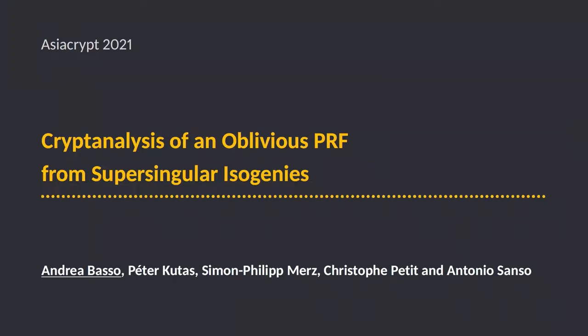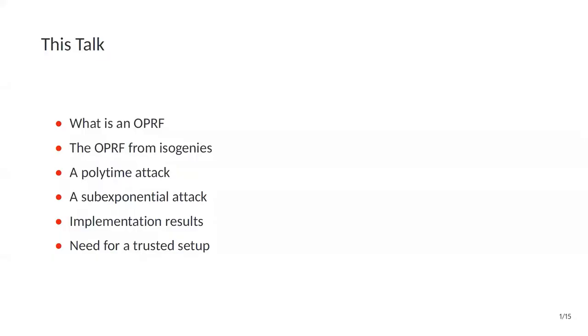Hi, everyone. My name is Andrea Basso, and I'm going to present our work on cryptanalyzing an oblivious pseudorandom function protocol based on supersingular isogenies by Bonet, Kogan, and Vu. This is joint work together with my co-authors Peter Kutesch, Simon Philip Mertz, Christophe Petit, and Antoni Sansou. I will start by briefly recalling what an OPRF is, then describe the protocol by Bonet et al., present two types of attack — a polytime attack and a sub-exponential time attack — and conclude by describing implementation results and discussing the need for a trusted setup.